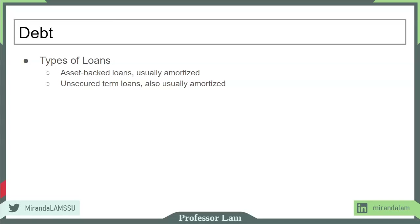Another very common loan type is called unsecured term loans. Most lenders of this type are commercial banks. Unsecured means they are not backed by any specific asset. These loans are also amortized. A very common form used by many businesses, particularly seasonal businesses, is lines of credit — a promise by a bank to advance credit to the company, but the company doesn't pay interest until they actually draw on the loan. Lastly, there's a concept called factoring, which is not actually a loan.